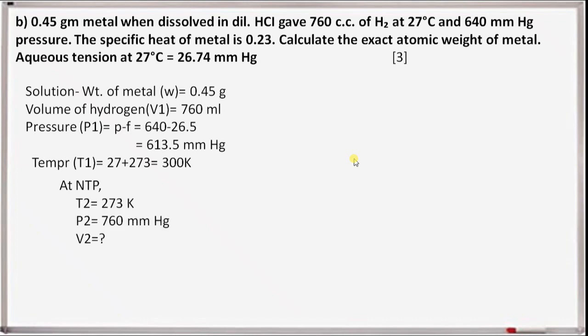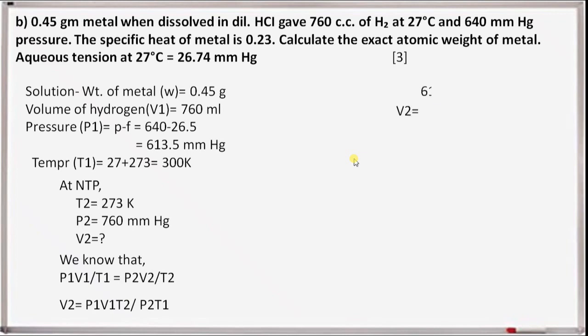At NTP, T2 equals 273 Kelvin, P2 equals 760 mmHg. V2 equals what? We know that P1V1/T1 equals P2V2/T2, or V2 equals P1V1T2 divided by P2T1. Substituting: 613 into 760 into 273, divided by 760 into 300, which equals 557.83 ml.